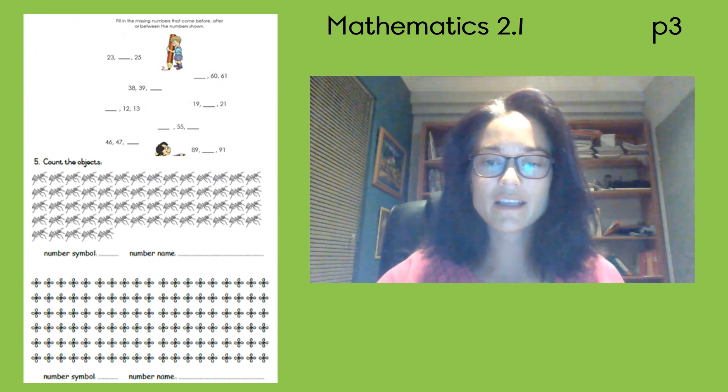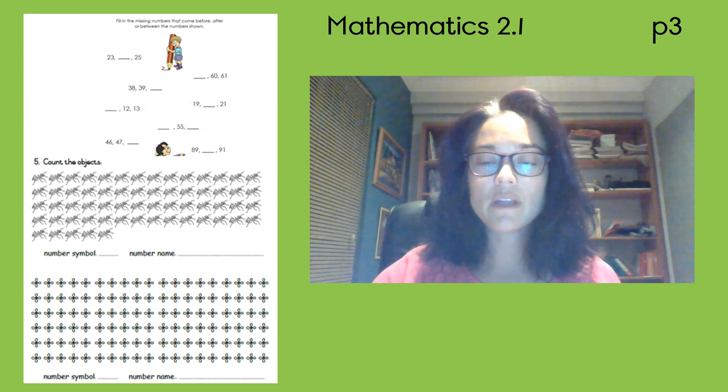Okay, so in this page, you're going to start at the top. You're going to write the number that comes between before or after the number that I gave you. Then you're going to count how many ants there are and how many flowers there are. I suggest you put them in groups. Group them in twos, in fives and in tens and then count in either twos, fives or tens. Go write the number symbol as well as the number name.